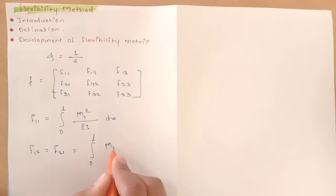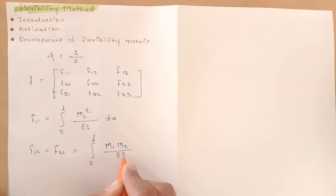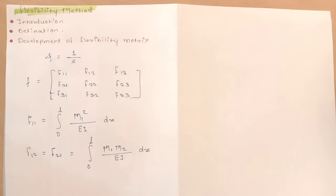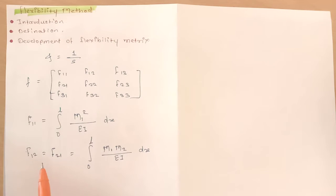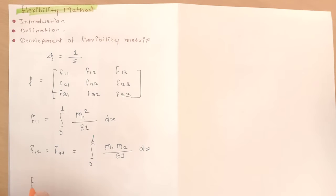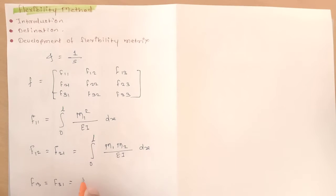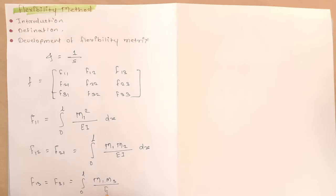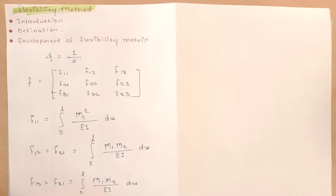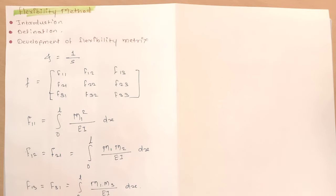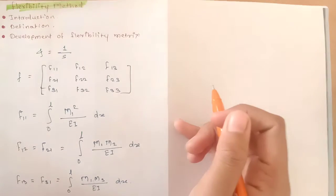The lower limit is always 0. The diagonal elements — F12 and F21 — are always equal to each other. Similarly, F13 is equal to F31, given by the integral from 0 to L of M1 times M3 divided by EI, into dx. These are the formulas to find the flexibility matrix. Now we will take the first problem.